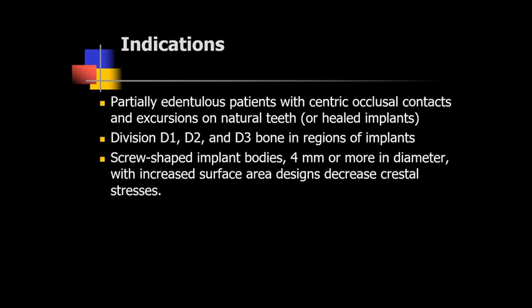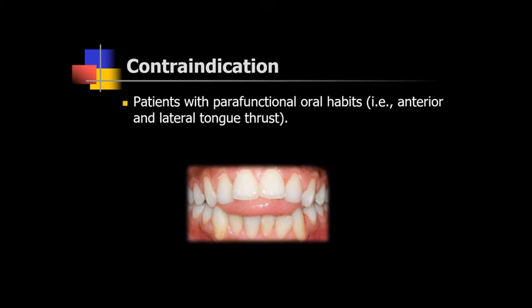The indications of the NFIT concept include partially edentulous patients with centric occlusal contacts and excursions on natural teeth, D1, D2, and D3 bone in the region of implants, and cases where screw-shaped implant bodies of 4 millimeters or more in diameter with increased surface area designs can be used to decrease crestal stresses. The contraindication includes patients with parafunctional oral habits, for example bruxism and lateral tongue thrusting.